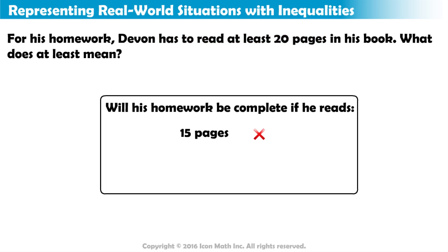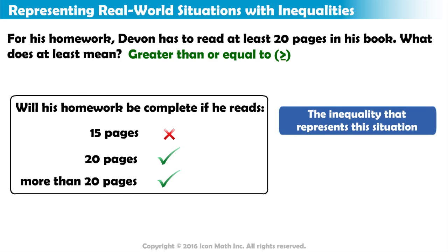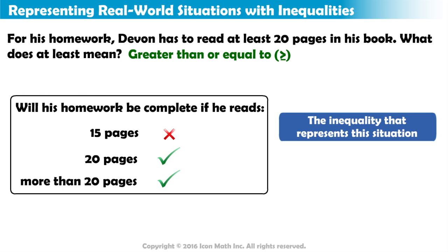No. What if he reads 20 pages? Will he have completed his homework? Yes. Can he read more than 20 pages? Yes. At least means greater than or equal to. So the inequality that represents the number of pages, P, that Devin must read is P is greater than or equal to 20.